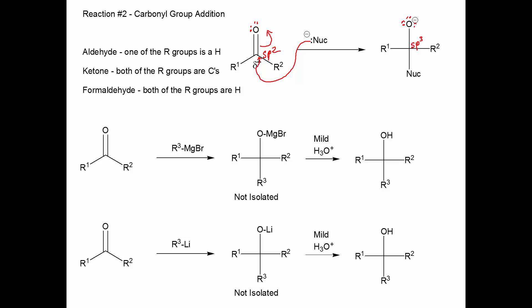Since we haven't had ketones and aldehydes yet, let's just review a nomenclature issue. We call it an aldehyde if one of these R groups is a hydrogen; we call it a ketone if neither R group is hydrogen — if both are carbon groups. We call it formaldehyde if both R groups are hydrogen, and formaldehyde is not a class of compounds — there's only one, it's a unique compound.